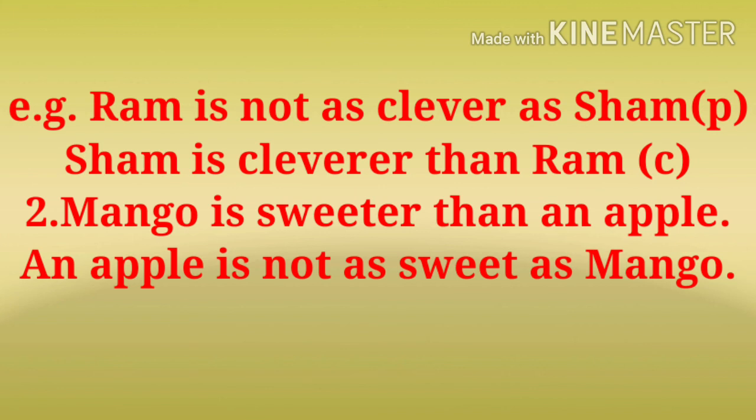Example number two. 'Mango is sweeter than an apple.' It is comparative degree. We must convert it into positive degree: 'An apple is not as sweet as mango.'